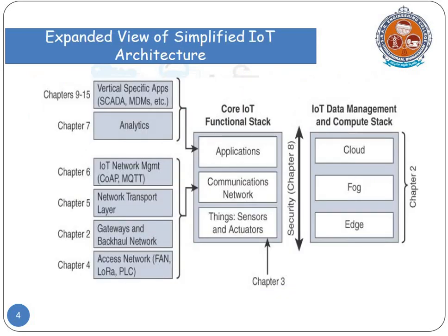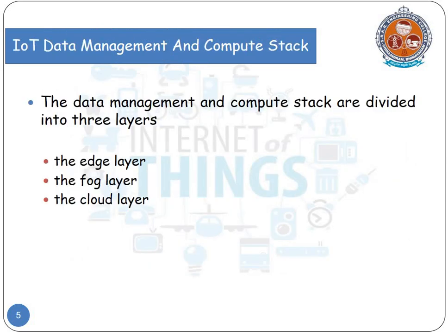The IoT Data Management and Compute Stack is further divided into three layers: Cloud Layer, Fog Layer, and Edge Layer. We will see individually what each of these layers represents.